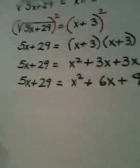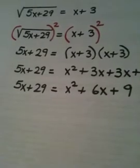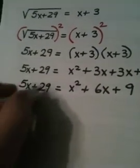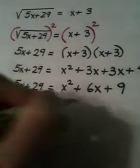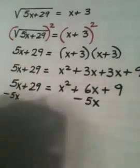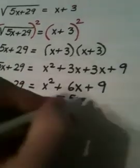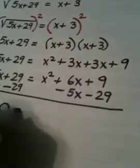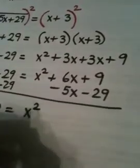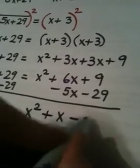I have a quadratic equation to solve. Remember, quadratic means degree 2. The way I'm going to solve this equation is I'm going to set the left-hand side equal to 0 by subtracting 5x and by subtracting 29. So I have 0 equals x squared plus x minus 20.